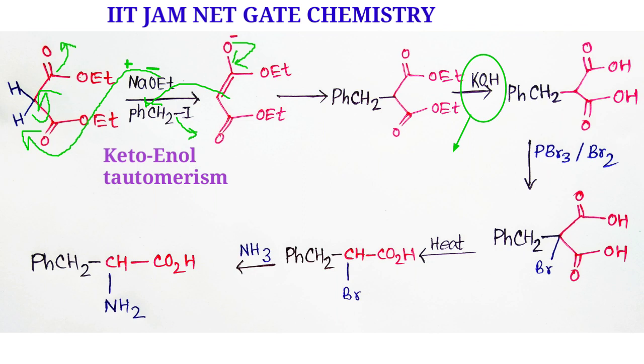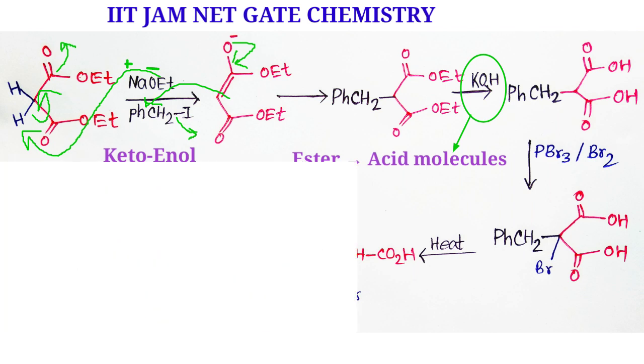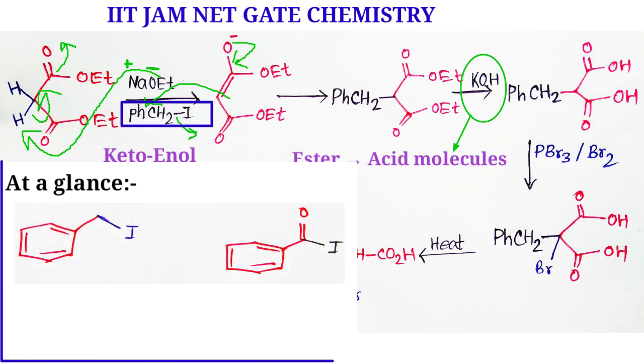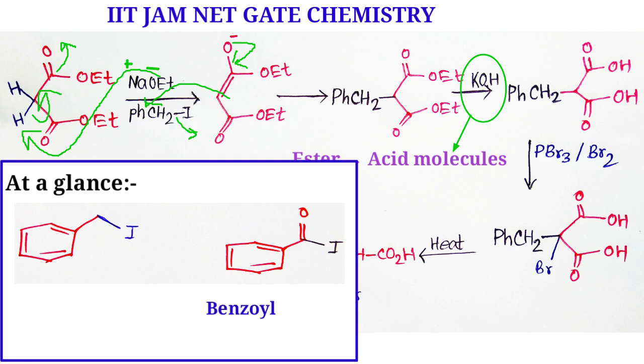The base produces acid molecules from ester. Here, remember one thing: it is benzyl iodide, not benzoyl iodide. What is the difference between benzoyl iodide and benzyl iodide? This one is benzoyl iodide, and this one is benzyl iodide. Remember this.